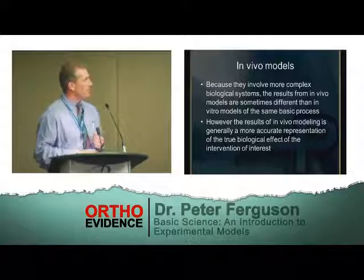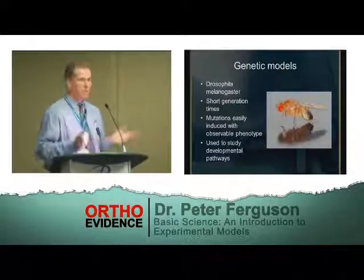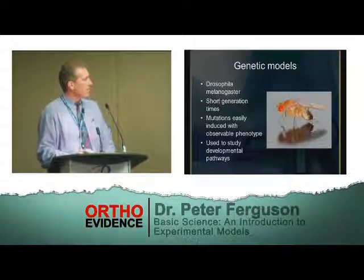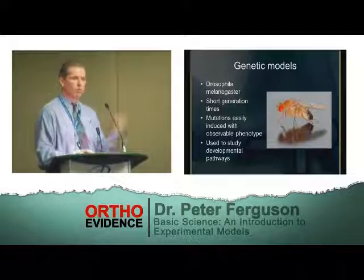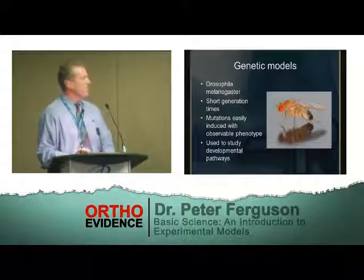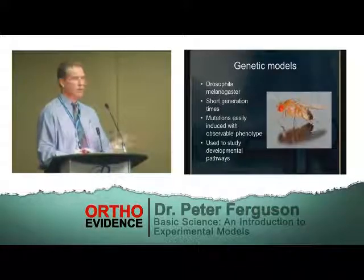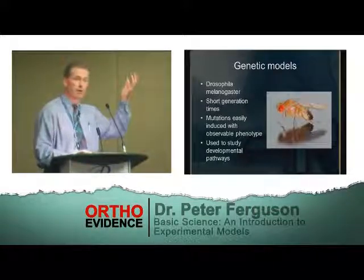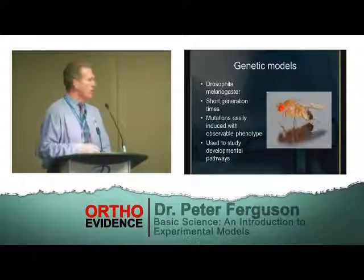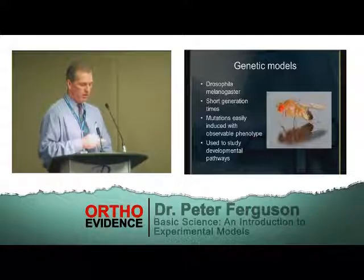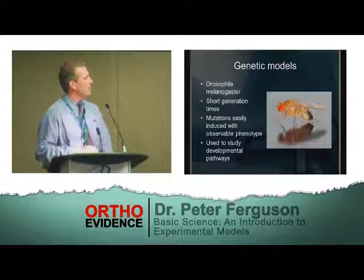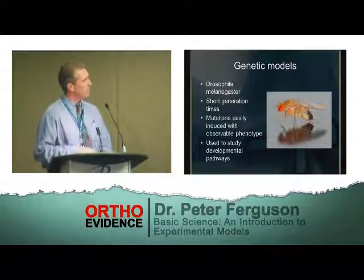Let's talk about a couple of genetic models. The fruit fly — Drosophila — is very important and attractive to people doing genetic work because they have very short generation times, they grow and die like crazy, and you can very easily induce mutations in them and track those mutations. If they get a third eye growing out of the center of their head, you can really see that. They're used to study developmental pathways, and some orthopedic surgeons interested in development use that as their model of interest.